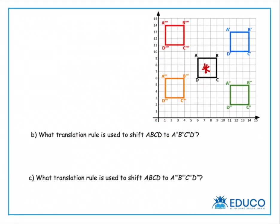Our second question here says, what translation rule is used to shift ABCD to ABCD double prime? So now that we've got that first example done, these ones should be a little bit easier. We know that this question is asking us where this shape, our black original box, what the translation rule is for that to be shifted all the way down to our green box here, which is our double prime box.